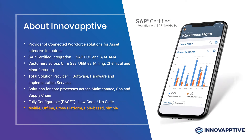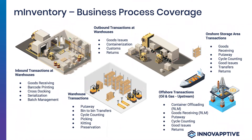Looking specifically at the M-Inventory application and its business process coverage from a warehouse point of view — it supports all your inbound transactions, which includes goods receipts, barcode printing, cross-docking, serialization, and batch management. All of your warehouse transactions within your four walls or in a yard, including put-aways, bin-to-bin transfers, cycle counting, picking, kitting, staging, and preservation. And when it comes to moving goods out of the warehouse, we're looking at transactions like deliveries, goods issues, containerization, customs, and returns processing.